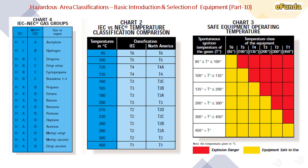Moving to the IEC/NEC gas group chart and temperature classification comparison: the safe equipment operating temperature chart indicates explosion danger in red and equipment safe to use in yellow. Please refer to this table carefully for better understanding of hazardous area classifications.